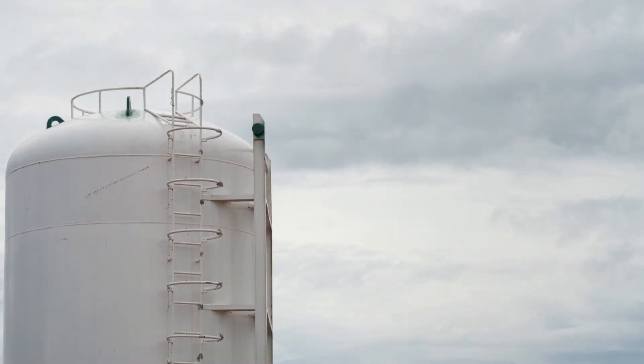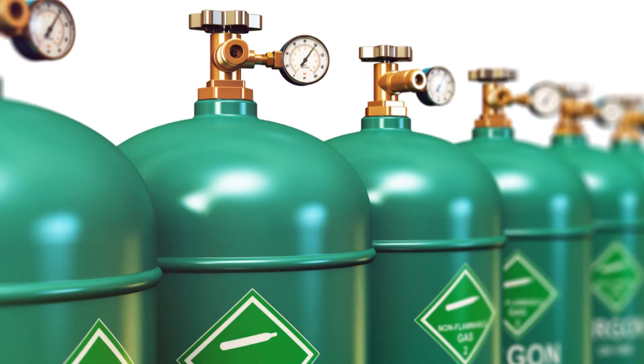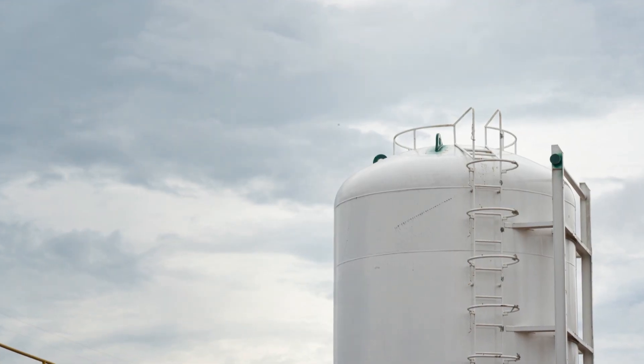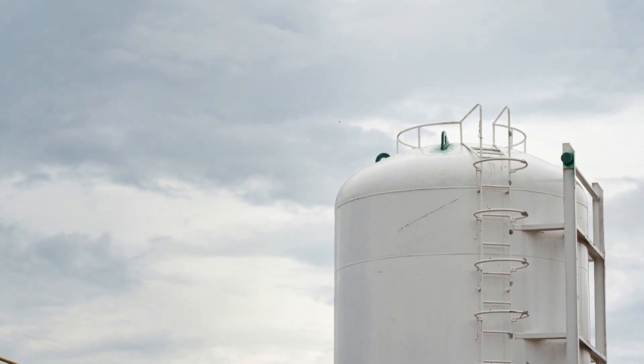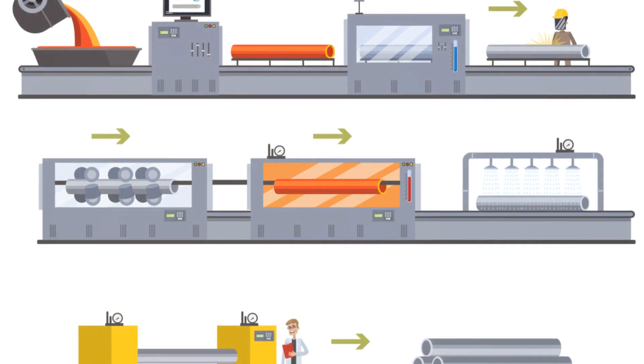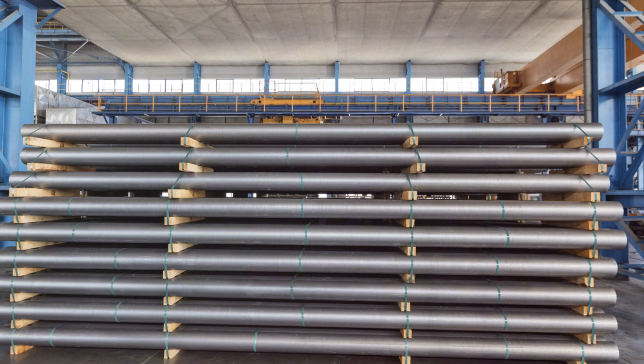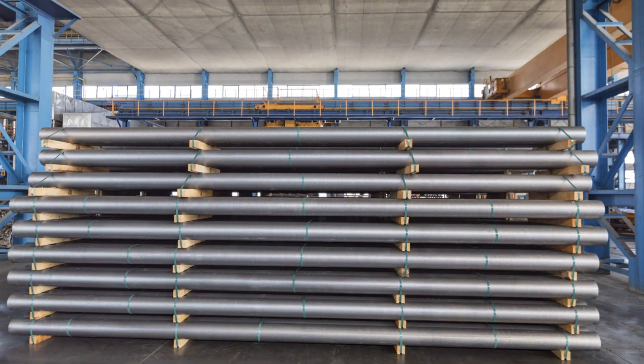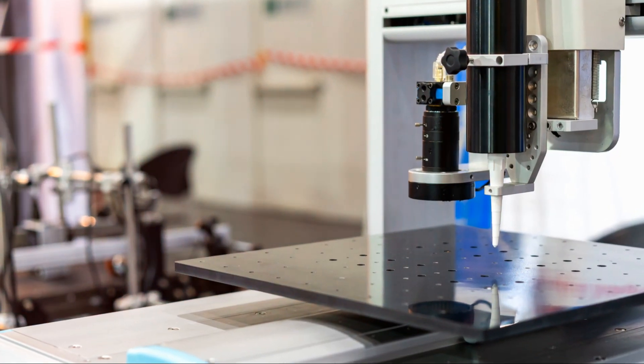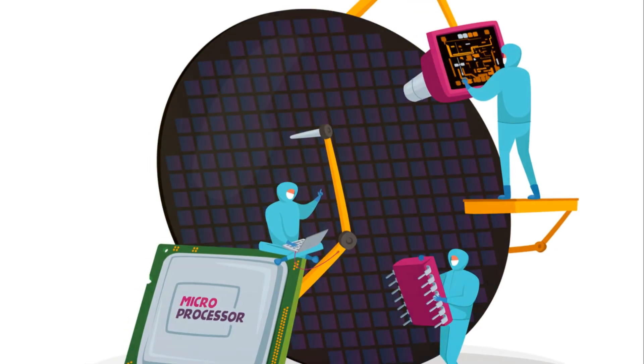Remember, we're dealing with temperatures hotter than a volcano here, so the last thing we want is our silicon reacting with oxygen or nitrogen in the air. After a period of intense heating, our high purity polycrystalline silicon transforms into a molten state. This is our silicon melt, a pool of liquid silicon that's ready to be turned into a single crystal. It's a fascinating process, one that's as much about precision and control as it is about high temperatures and chemical purity.